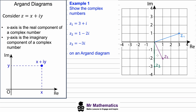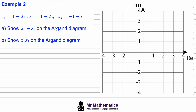In Example 2 we are given three complex numbers z1, z2, and z3, and asked to show z1 plus z2 on the Argand diagram. We add the real parts — one plus one gives two — then add the imaginary parts: positive 3i and negative 2i gives i. So z1 plus z2 equals 2 plus i. On the Argand diagram we plot two on the real axis and one on the imaginary axis, labelling this z1 plus z2.